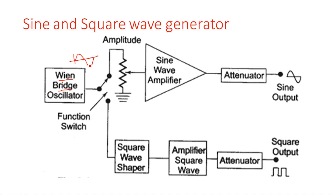The Wien Bridge oscillator generates a basic sinusoidal waveform. The output of this oscillator is fed to a function switch, where the function switch can select either the sine wave generating circuit or the square wave generating circuit. This line is for sine wave and this block diagram is meant for square wave generation.